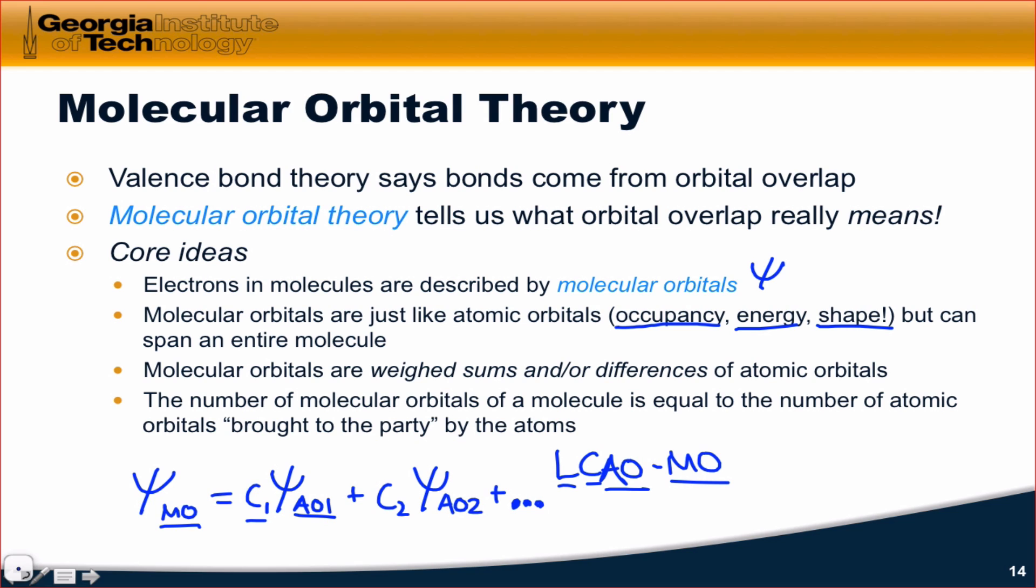When we do this, the number of molecular orbitals in a molecule must be equal to the total number of atomic orbitals brought to the party by the atoms. We do this just in case the atoms bring full shells. If the atoms bring in full shells, we need molecular orbitals to hold all of the electrons brought in by the atoms.